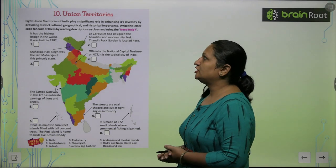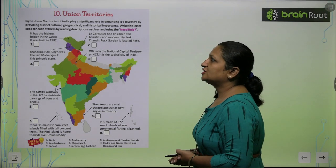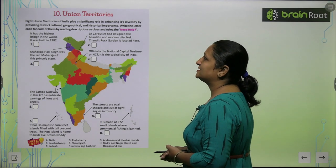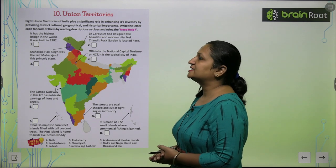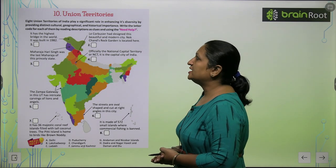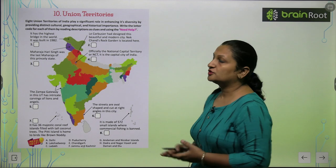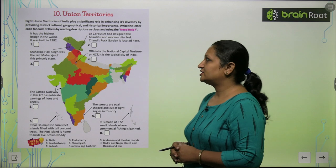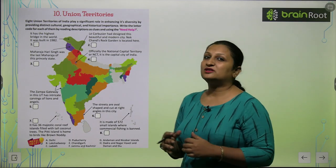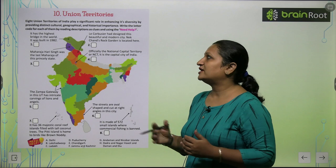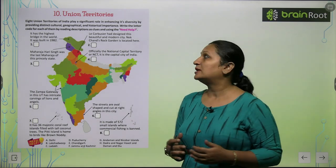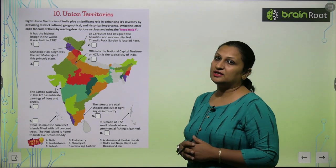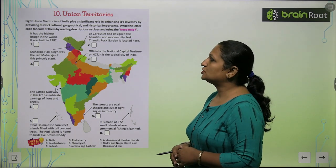Children, let's start with chapter number 10 — Union Territories. Eight Union Territories of India play a significant role in enhancing its diversity by providing distinct culture, geography, and historical importance. India mein kitni Union Territories hain — there are eight Union Territories, aur yeh bahut important role play kerti hain diversify karne mein humare culture ko, hamari geographical conditions ko, aur historical importance rakhti hain yeh sab.